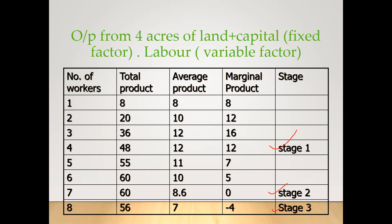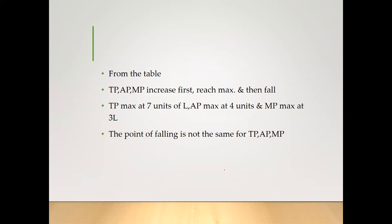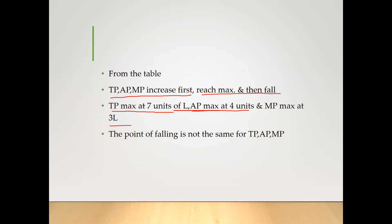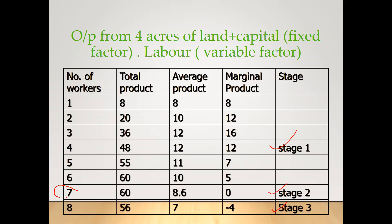I am going to explain these three stages in the curve as well. But before discussing the curve, I want to share that TP, AP, and MP increase first, reach a maximum, and then fall. TP is maximum at 7 units of labor, AP is maximum at 4 units, and MP is maximum at 3 units. Looking at the table, at the 7th unit, TP is at its maximum.